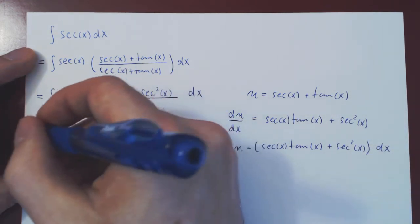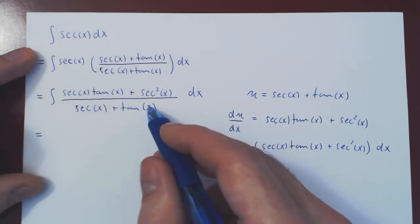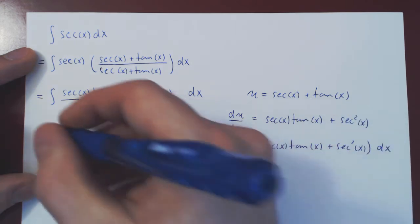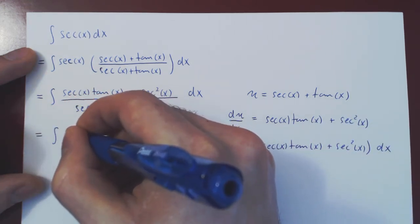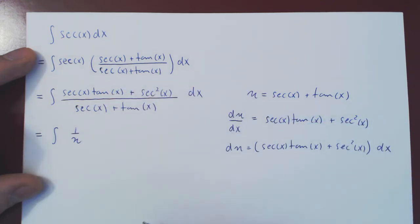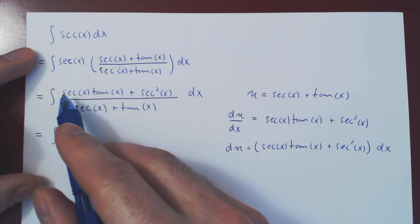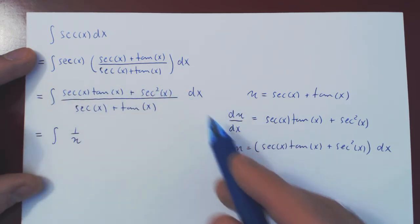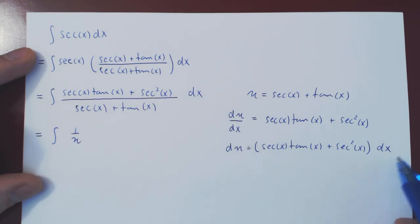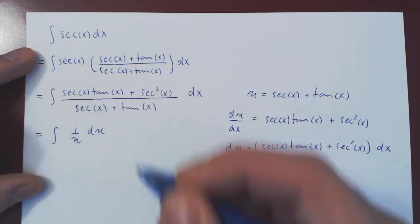And if you look now, the integral will become trivial. We have 1 over secant of x plus tan of x, that's just 1 over u. And on the numerator, we have times, well, secant of x tan of x plus secant squared, all of this times dx, but all of this times dx is just du. And now the integral is trivial.